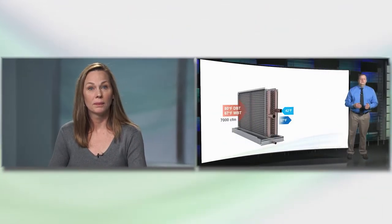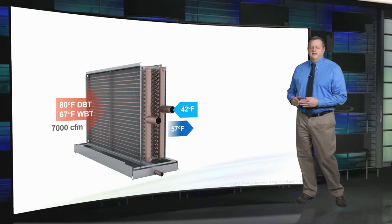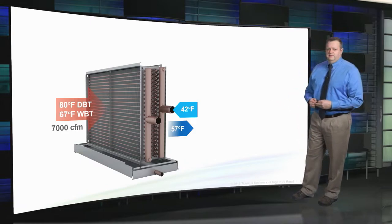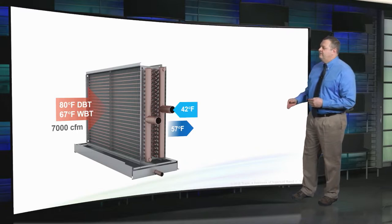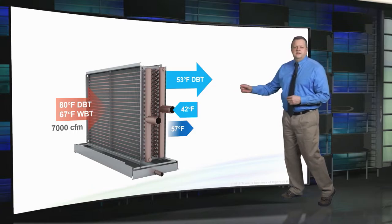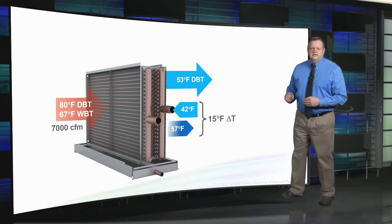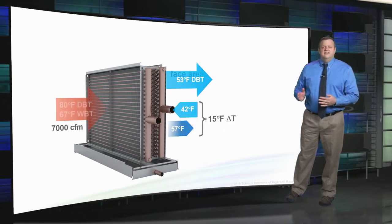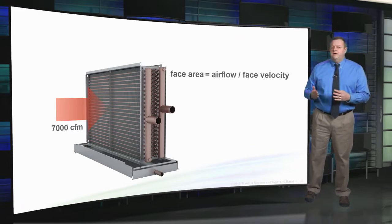Now given this new requirement, let's look at the process for selecting chilled water coils to achieve at least a 15 degree delta T. To demonstrate, let's look at an example chilled water coil selection. This coil is installed in a mixed air VAV air handler with a design supply airflow of 7000 CFM. The mixed air enters the coil at 80 degrees dry bulb and 67 wet bulb, and this air needs to be cooled and dehumidified to 53 degrees leaving the coil.